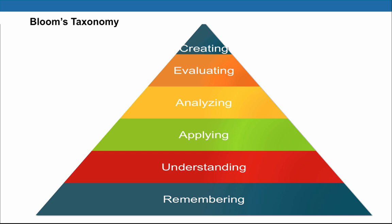Bloom's Taxonomy is a multi-tiered model of classifying thinking according to six cognitive domains. The taxonomy is divided into six levels of learning and we can associate action verbs with each of these levels. These six levels and the associated action verbs can be used to create learning objectives for your course.